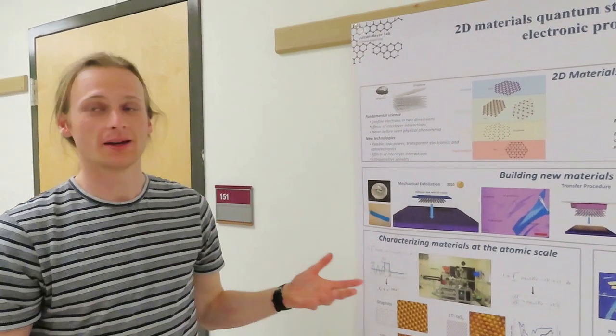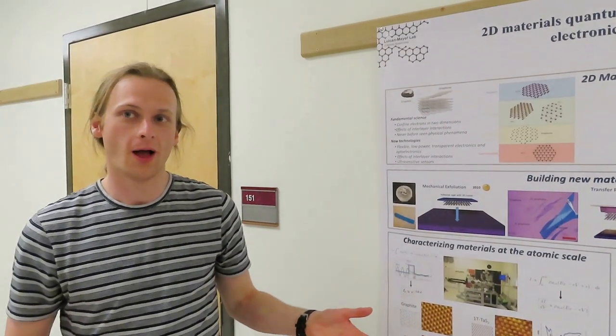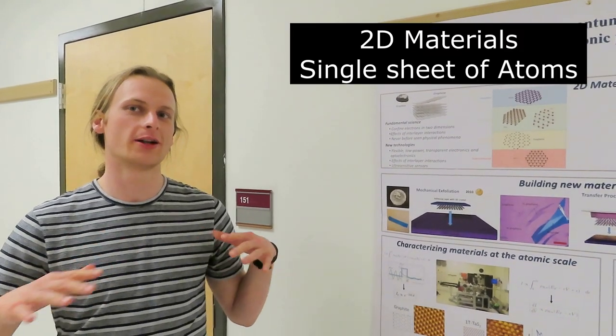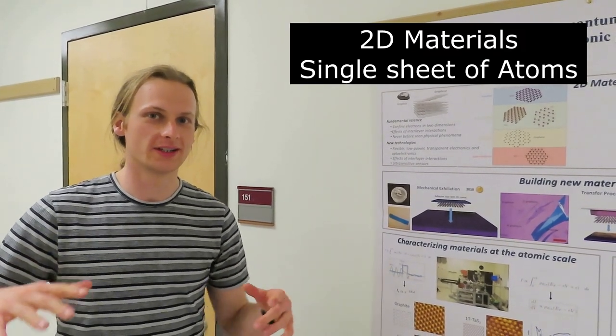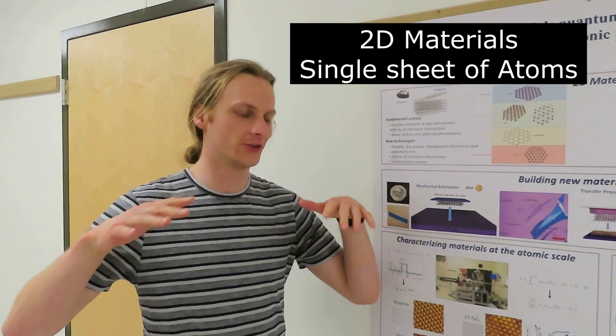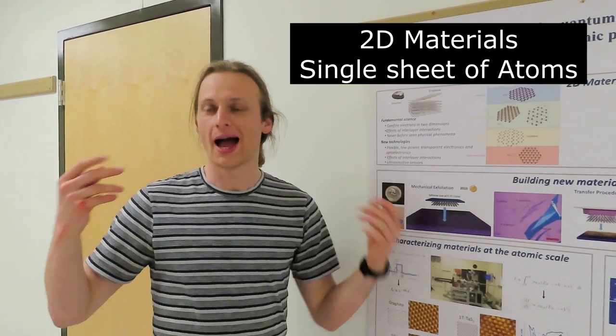So here we have some examples of things we work on in our group. Our group specializes in what we call two-dimensional materials—these are materials where you can get a single sheet of atoms. So how is that possible?